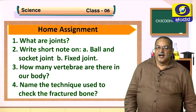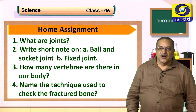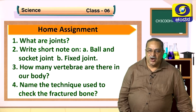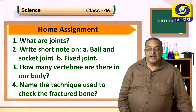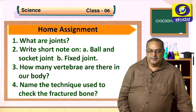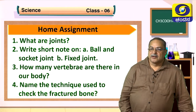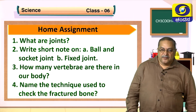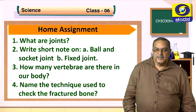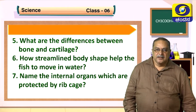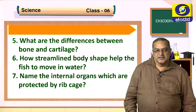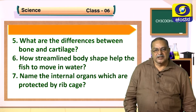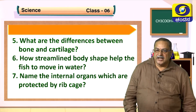Home assignment questions: What are joints? Write short notes on ball and socket joint and fixed joint. How many vertebrae are there in our body? Name the technique used to check a fractured bone. What are the differences between bone and cartilage? How does a streamlined body shape help the fish to move in water? Name the internal organs protected by the rib cage.